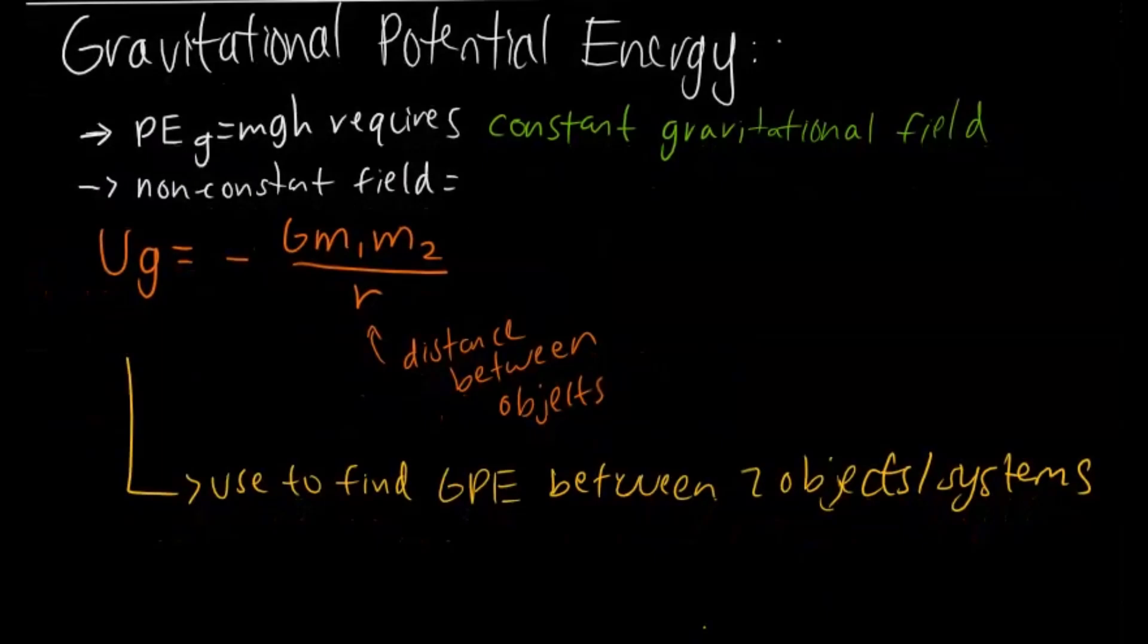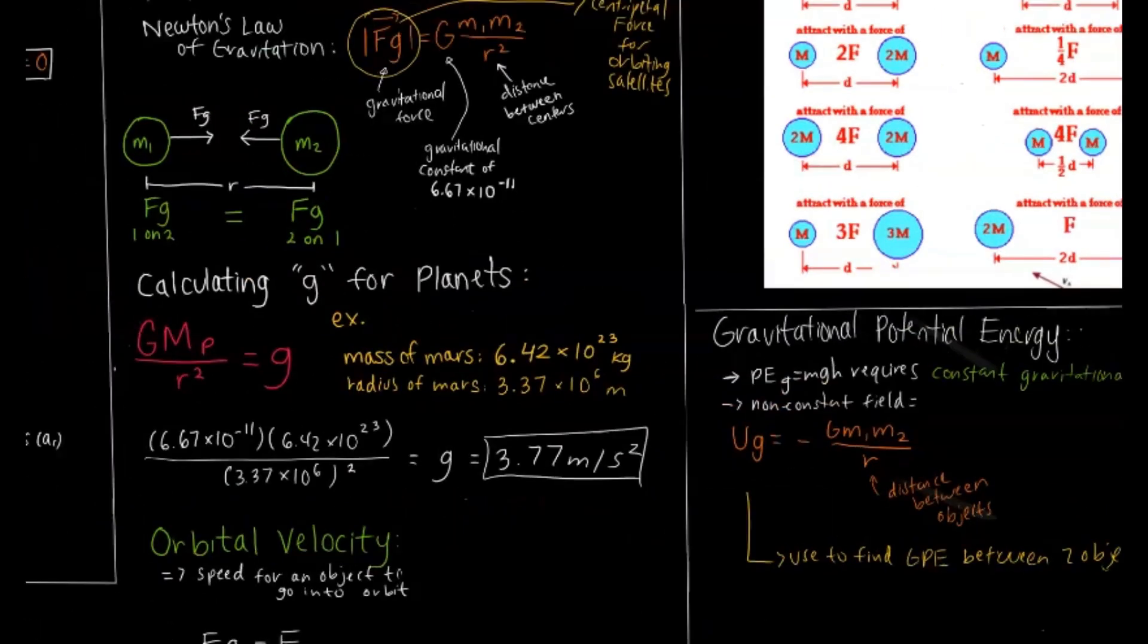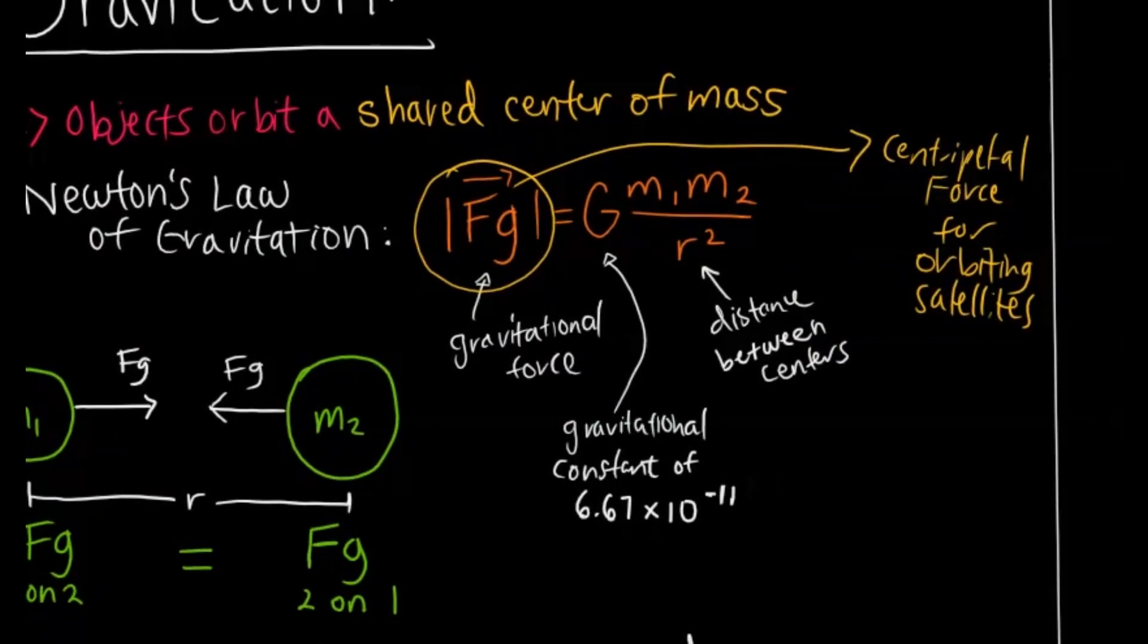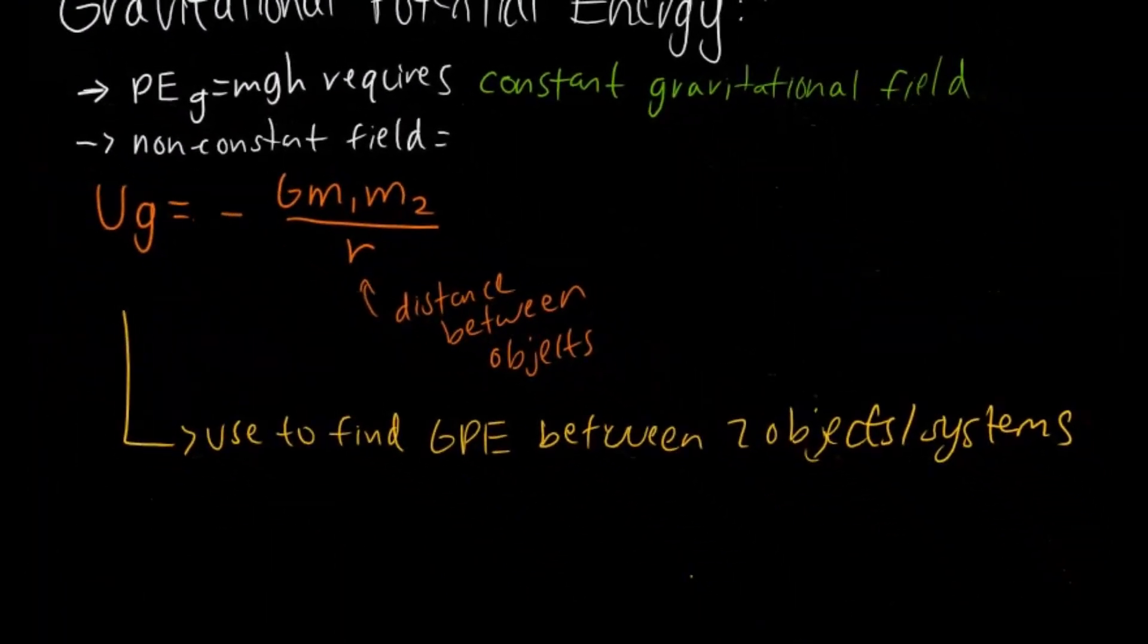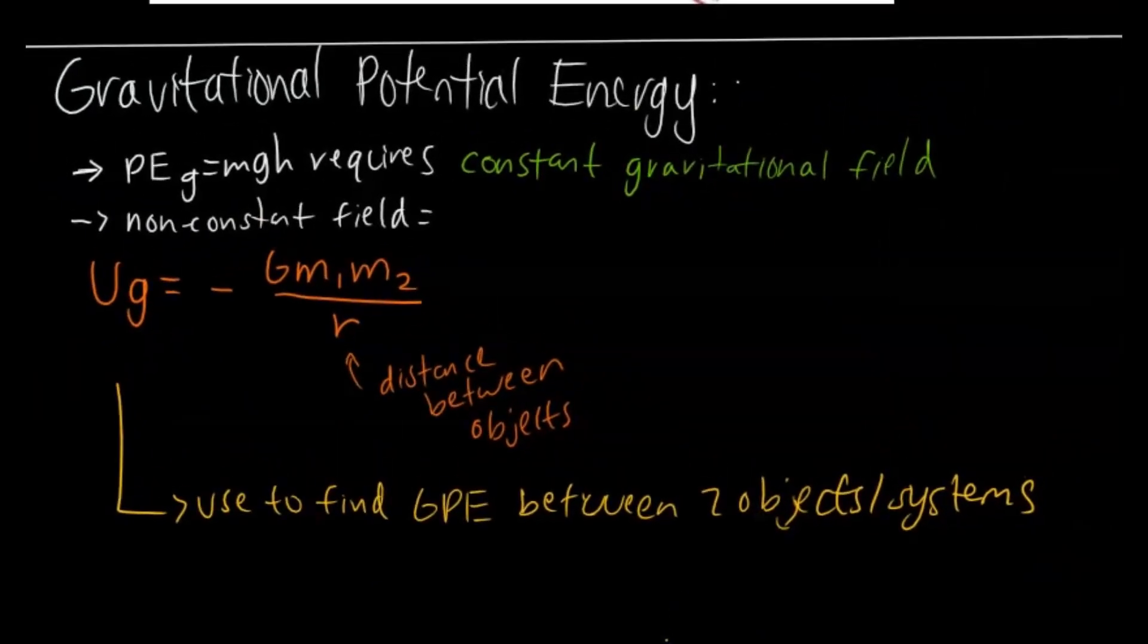And our final topic today is gravitational potential energy. So when we are on Earth, there is a constant gravitational field, which is why we can use the equation gravitational potential energy equals MGH. However, when there's a non-constant gravitational field, we're going to have to use this other equation, which is gravitational potential energy is equivalent to negative gravitational constant times mass of 1 times mass of 2 and then divided by R, distance between objects. So it's very similar to Newton's law of gravitation, except the R is not squared and it is also negative. So you're going to use this to find the gravitational potential energy between two objects or systems.